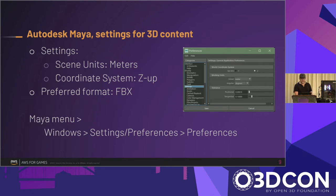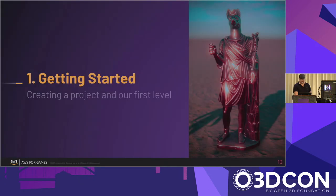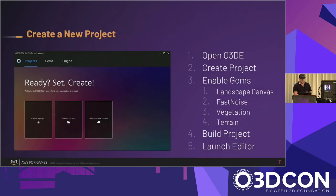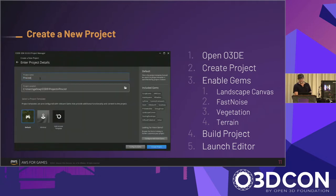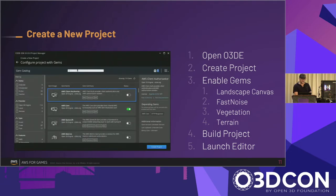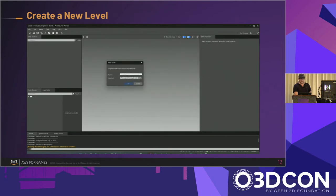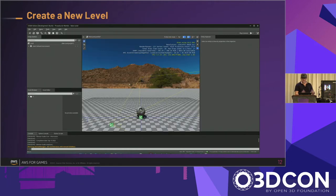Some basic settings: when I work in Maya, I use scene units of meters and a Z-up coordinate system because that best matches the engine, and my preferred export format is FBX because it works best with the Open 3D Engine asset processor. To get started, you want to launch the O3D project manager, create a project, and configure the gems. In this demo I'm using the landscape canvas gem, which enables the fast noise gem, the terrain gem, and the vegetation gem. Then you build your project and launch the editor. Once in the editor, you just make a new level. The default level looks like this, and we're going to start modifying it.